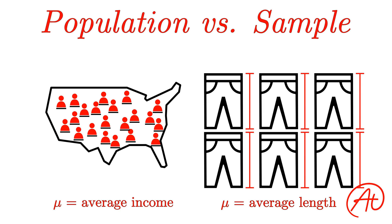However, with the magic of statistics, we don't have to. Instead of collecting data on everything in our population, we can just collect data on a smaller subset of that population — a sample — and use that information to figure out some pretty powerful information about our larger population. In future videos, we'll go over all the awesome things you can determine about a population just from some sample data.